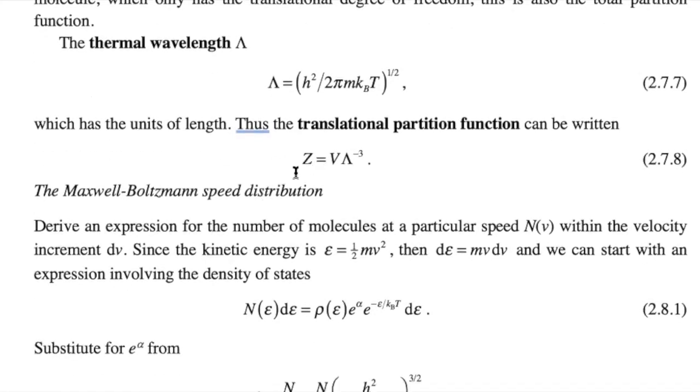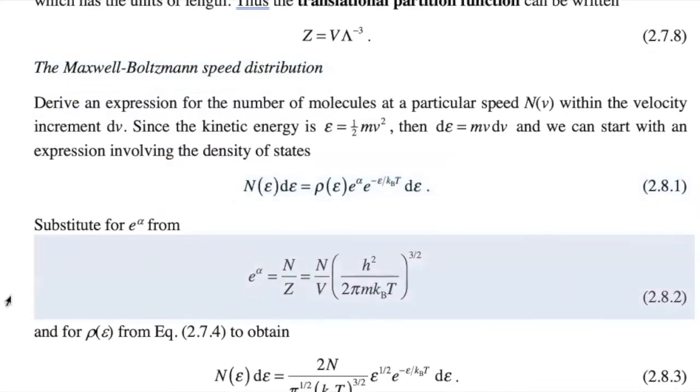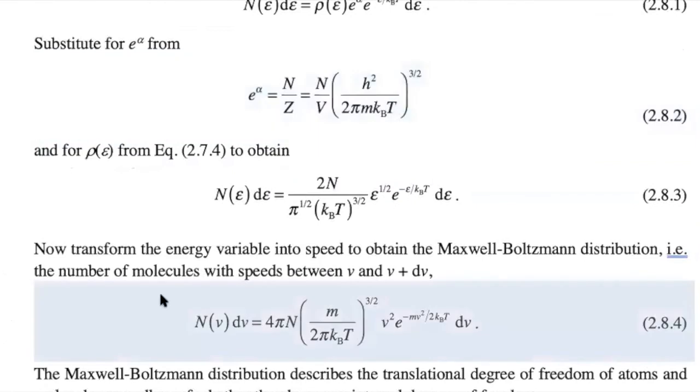Now that we have the translational partition function, we can actually derive the Maxwell-Boltzmann speed distribution. If we know how the energy levels are partitioned with energy, then we can substitute back in for that e to the alpha term, and determine how the number of molecules between speed v and v plus delta v relates.